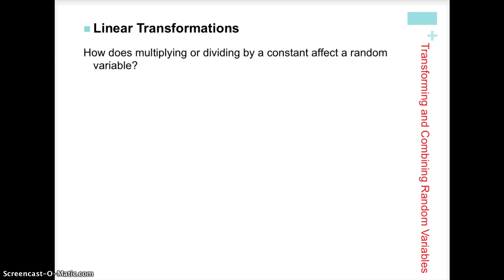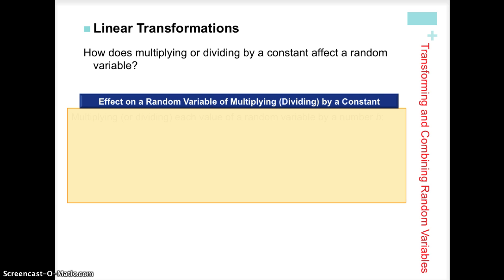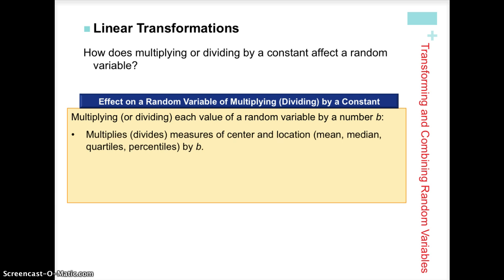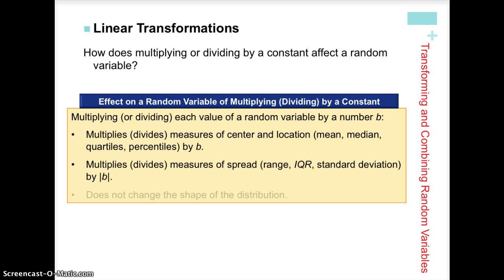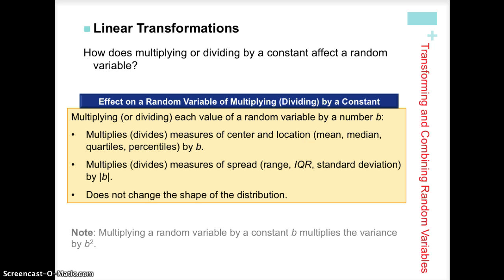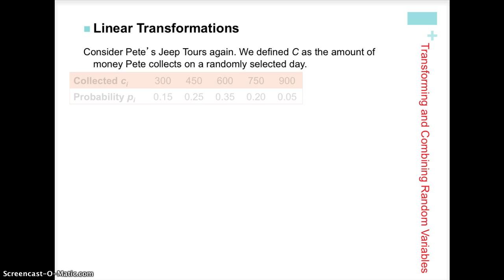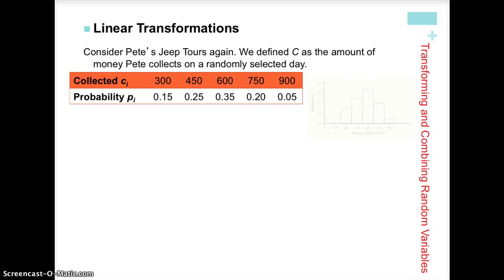So how does multiplying or dividing by a constant affect a random variable? We just saw the effects of this. Pause the video so you can read and take notes on this slide.